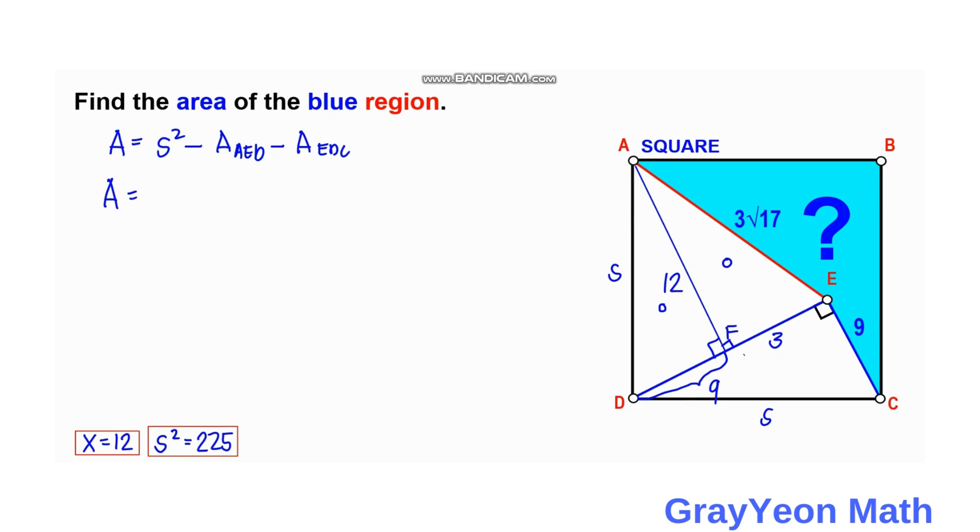So area simply equals 225 because S squared is 225, minus AED which is one half times the base which is DE which is 12, times 12, and the height which is 12 for AF.